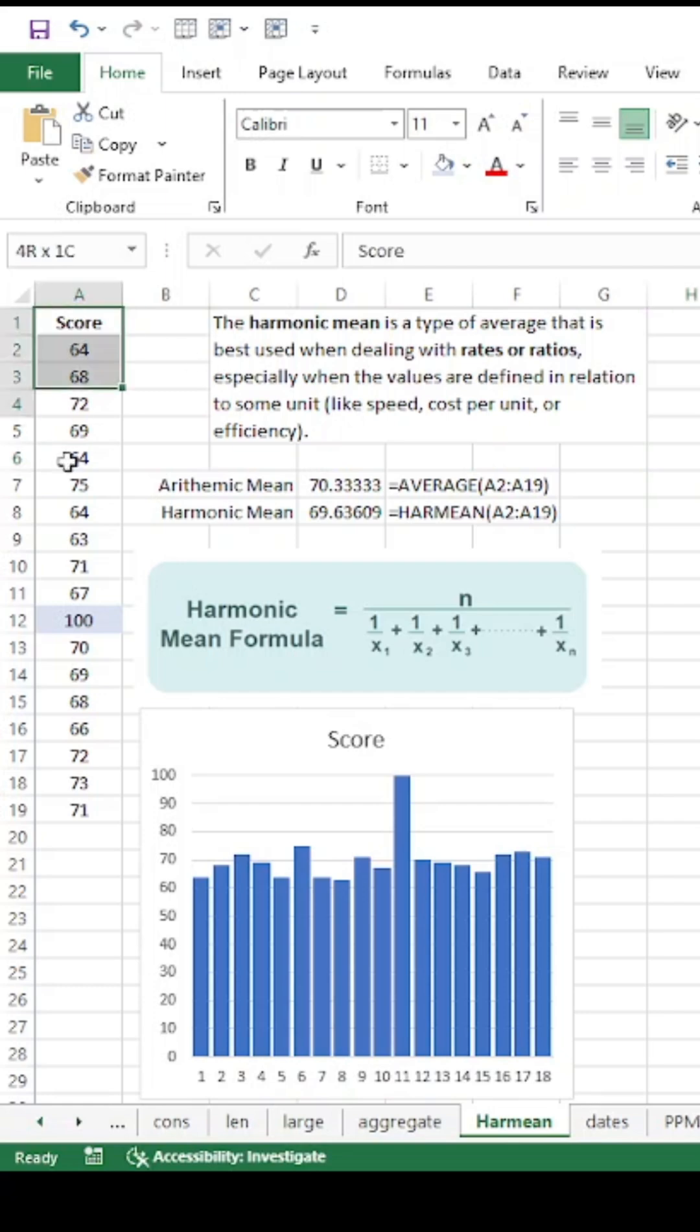For this example, I'm just using some straight numbers. So here we have the arithmetic mean. Typically the formula would be equals average, and then the numbers that are displayed A2 through A19.